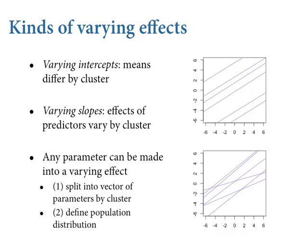We're going to spend the rest of the time today talking about varying slopes. Let me give you the quick phenomenological intro, and then we'll take the long, slow tour of building them up by construction. Varying intercepts allow the means to vary by cluster. In the top graph on the right-hand side, every unit is represented by a different regression line, but the slopes are still the same across clusters - the varying intercept parameters give them different levels. But obviously slopes could vary by cluster too.